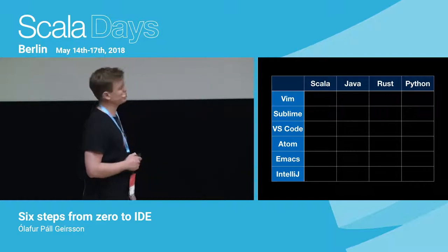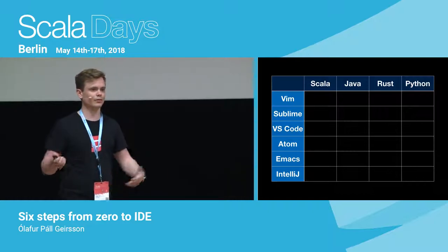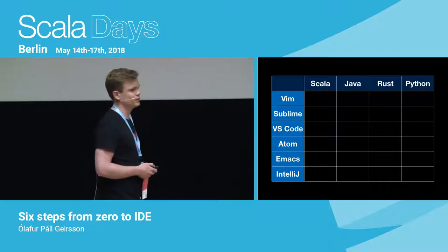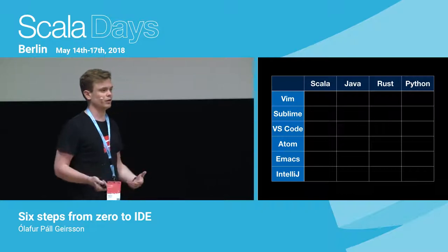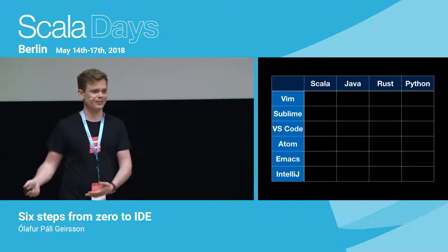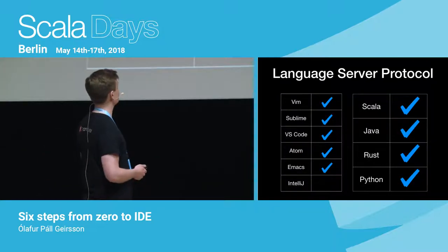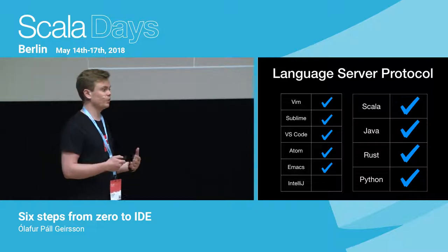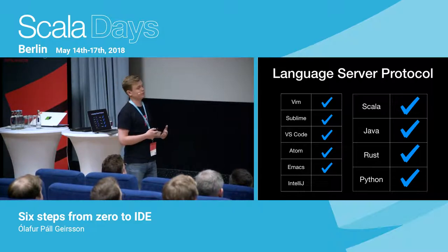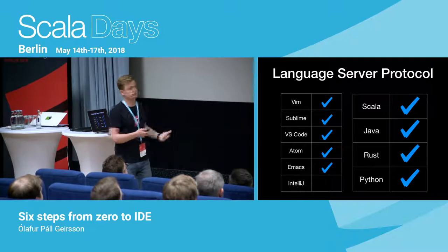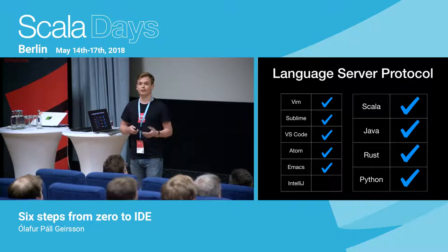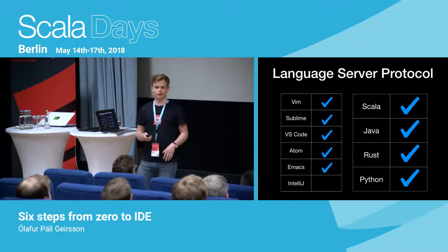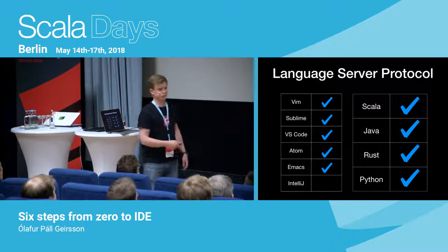The Language Server Protocol is inspired by this challenge: we want to do IDEs and make them work for every language and every editor. If you want to do Scala, you'd have to do a custom integration for Vim, for Sublime, for VS Code, and then the next language needs to repeat. This is not great, especially because typically people doing editors are low on resources and the ones doing languages are also low on resources. The idea of LSP is that you just specify the communication protocol between an editor and the language server, and then you can implement it once. There are language servers for over 30 languages and all of the major editors, and there's even work to do clients and servers for IntelliJ.